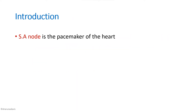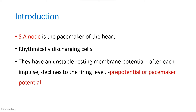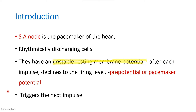You can start your answer with an introduction mentioning that the SA node is the pacemaker of the heart and that it contains rhythmically discharging cells. These cells have a very unstable resting membrane potential which, after each impulse, declines to the firing level — this is called the pre-potential or pacemaker potential, and it triggers the next impulse.